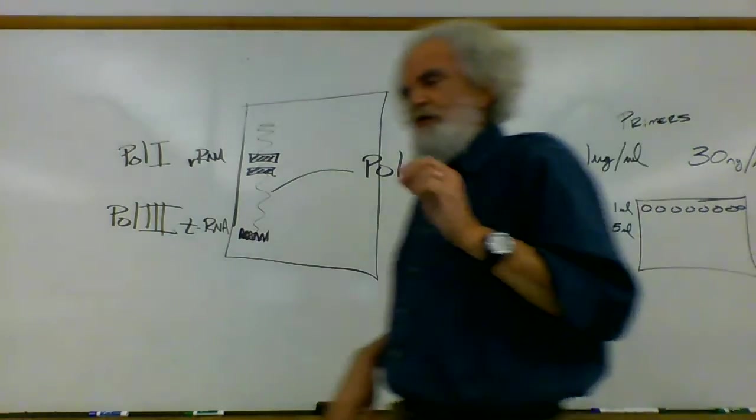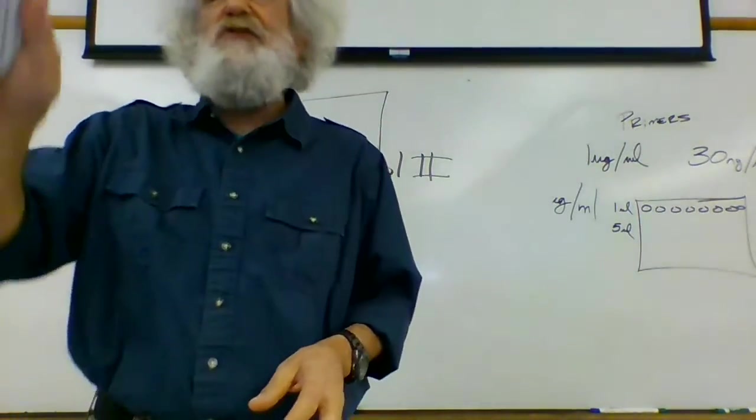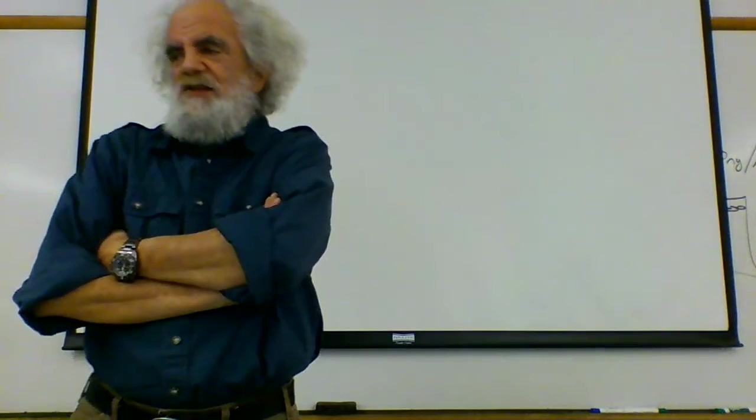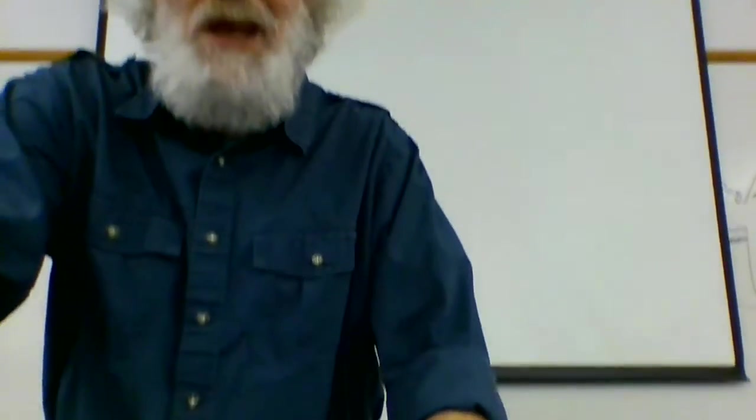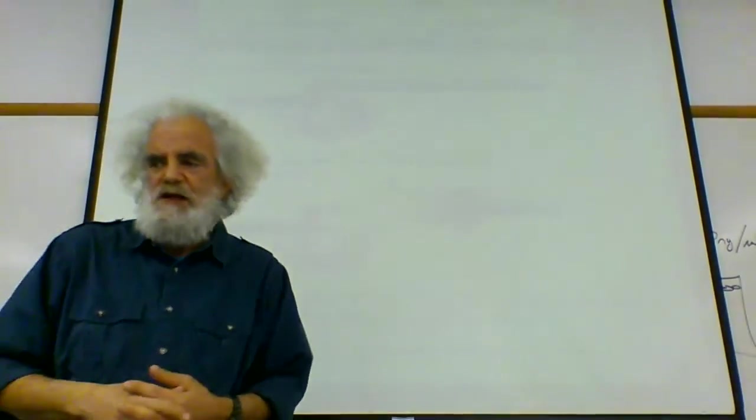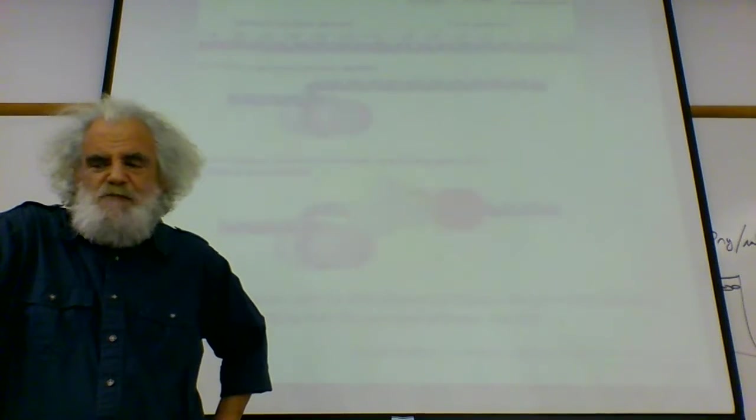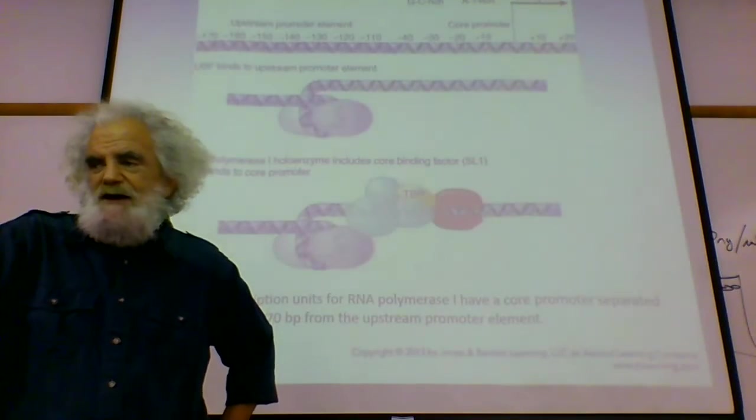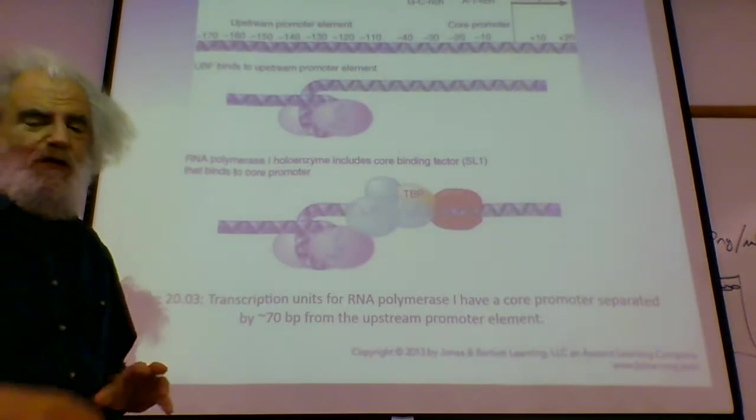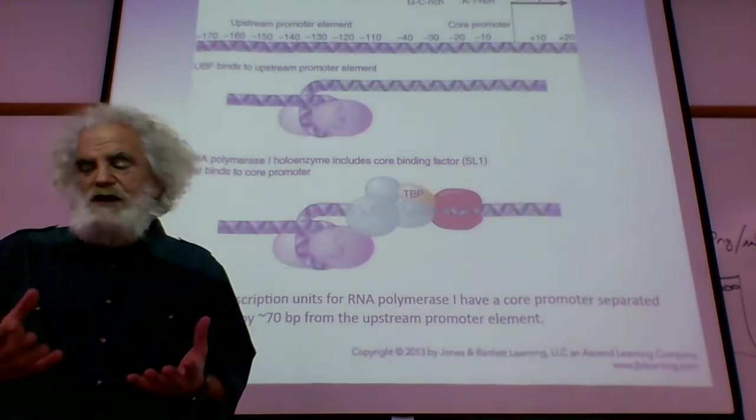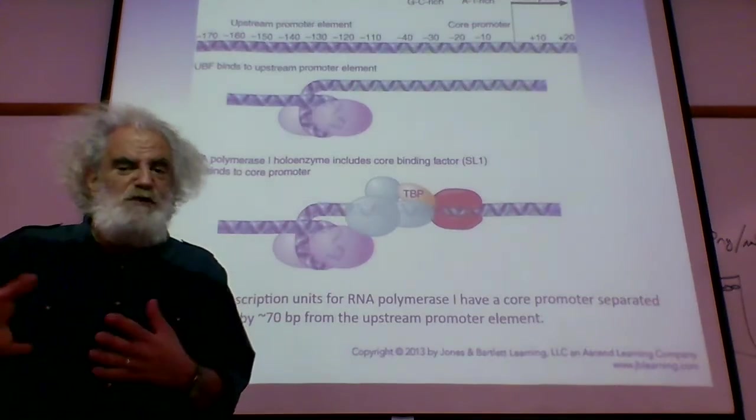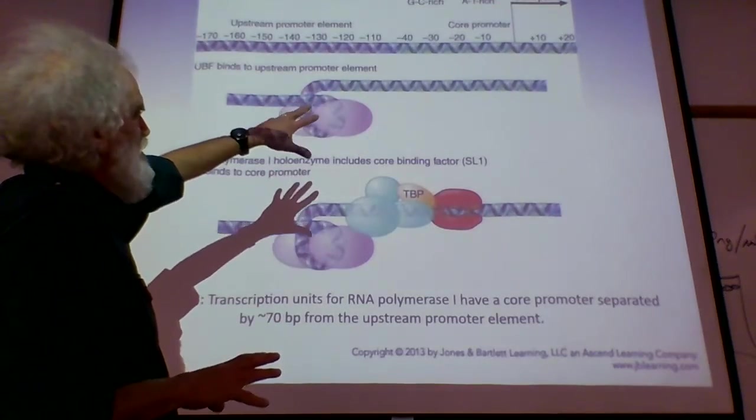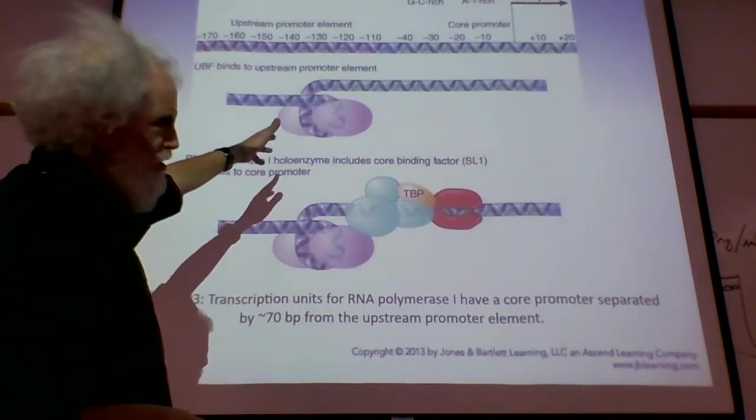Pol I and Pol III actually have some non-standard organizations of their promoters. They've got some different kinds of systems, and they are being expressed all the time. The RNA polymerase I holoenzyme has a number of core binding proteins and binding factors. The promoter for Pol I, that is the promoter that is driving large and small ribosomal RNA subunit production, has got sort of an odd little structure to it. We have a core promoter and an upstream promoter element, but these guys are on all the time.